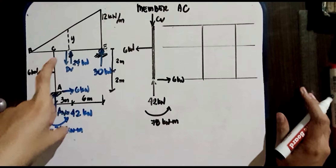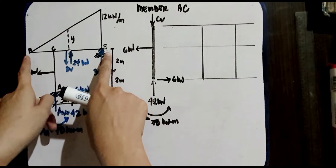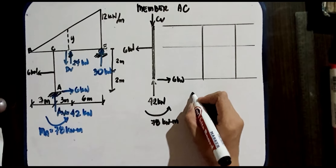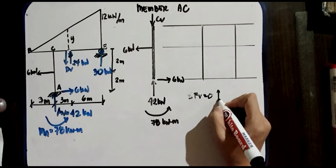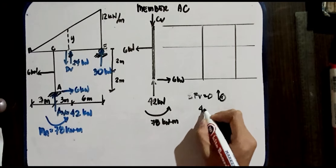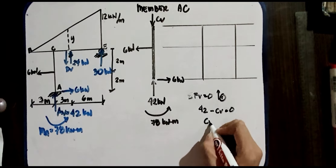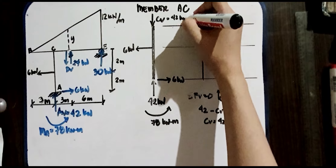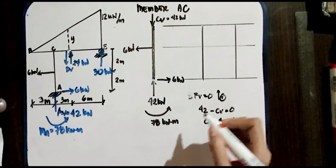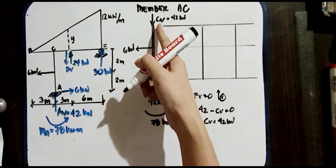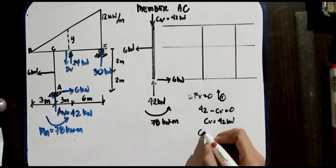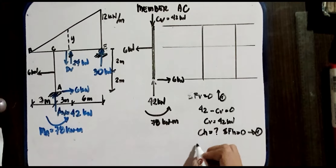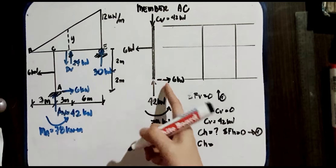Now we analyze member AC. Before starting member BE, we find CV by summation of vertical forces equal to 0: 42 − CV = 0, so CV = 42 kN. For CH, summation of horizontal forces equal to 0: 6 − 6 = 0, so CH = 0.